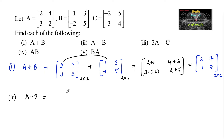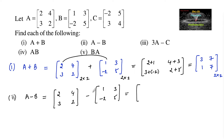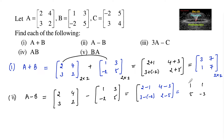The second one is A minus B, which equals matrix 2 4 3 2 minus matrix 1 3 negative 2 5. Subtracting corresponding elements: 2 minus 1 is 1, 4 minus 3 is 1, 3 minus negative 2 is 5, and 2 minus 5 is negative 3. So A minus B is the 2 by 2 matrix 1 1 5 negative 3.